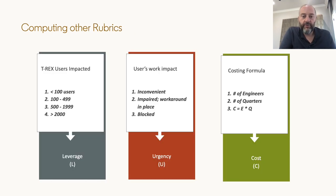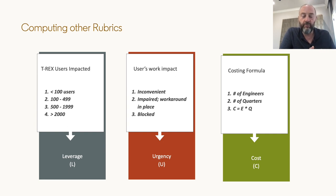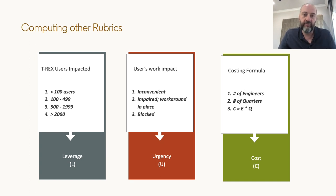Similarly, for the other rubrics we have identified different mappings. For leverage, we understand how many users are the potential users of the new feature and pick the corresponding number. For urgency, we determine whether users are blocked, have a workaround, or it's a nice-to-have capability. For cost, we use a T-shirt size rough estimation to identify the effort involved in implementing the feature.